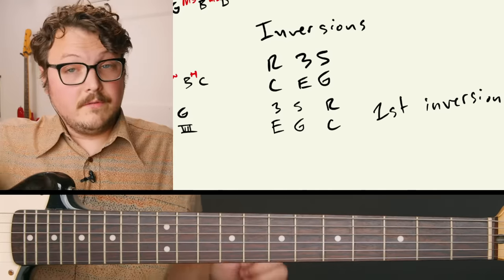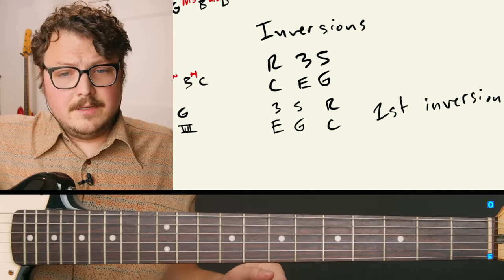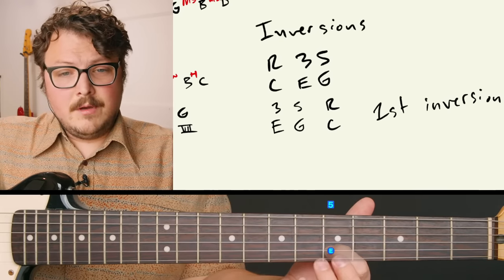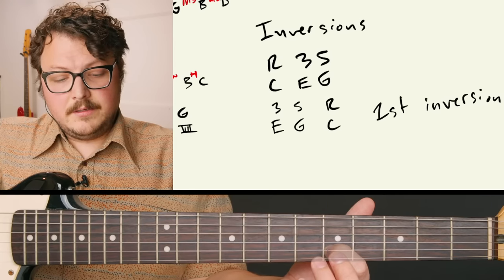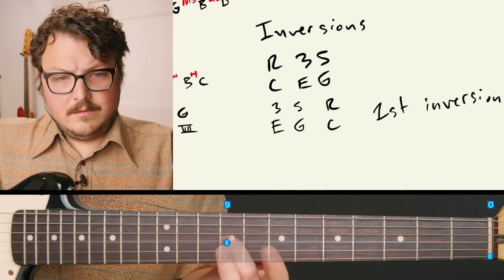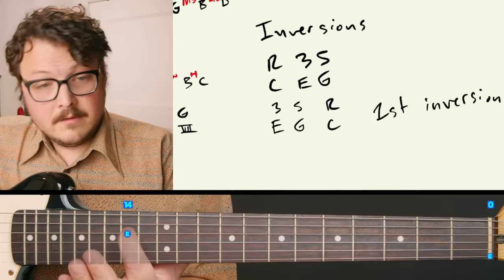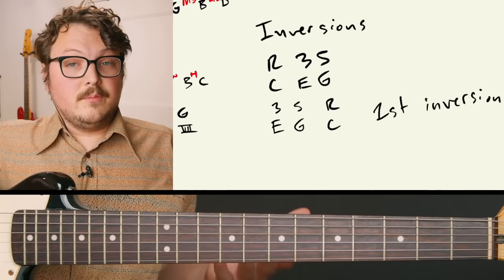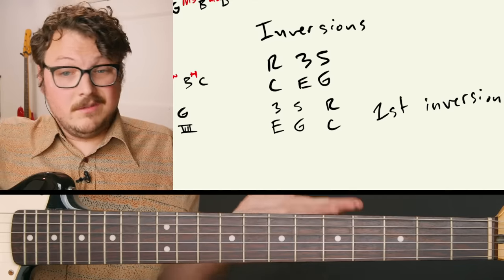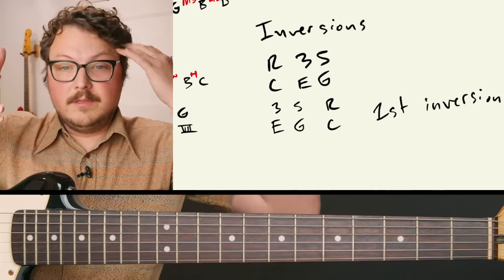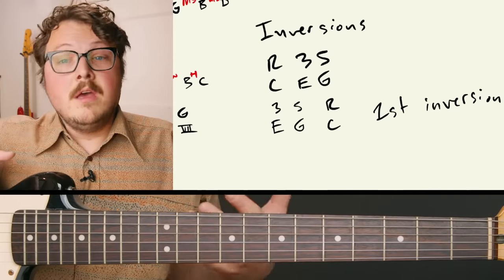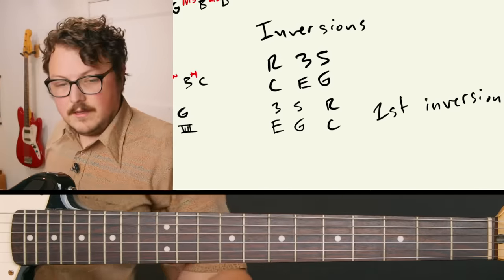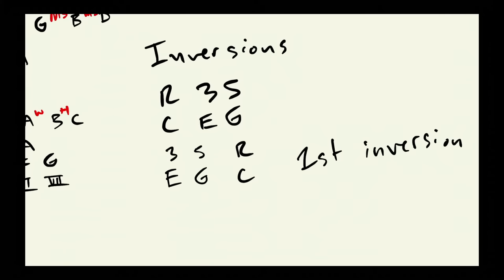The CAGED system helps you think of a specific shape. For example, if I say play an E-shaped C chord using just the bottom four strings, there's no other option for that. Part of the reason why guitar is so freaking weird is that one note — like E — appears on the first string open, the fifth fret of the B string, the ninth fret of the G string, the 14th fret of the D string — there are five different places to play the exact same note, and it can get really overwhelming.